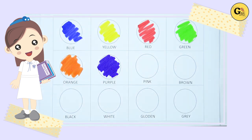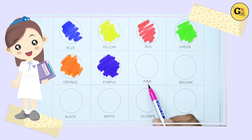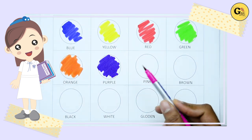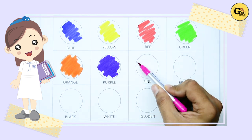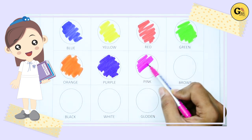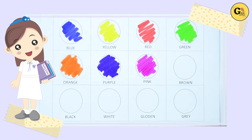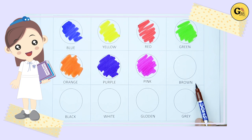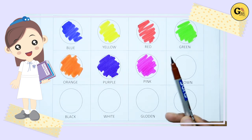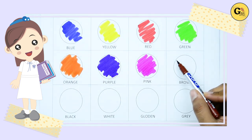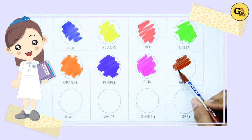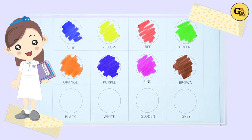Now P I N K. Pink. It's pink color. Pink. Now we want, which color? B R O W N. It's brown. Brown color. It's brown color.